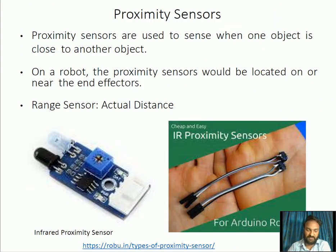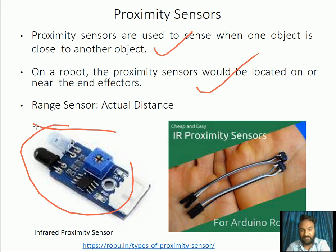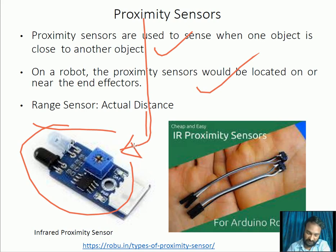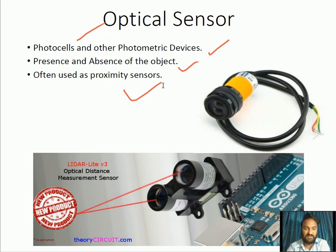Proximity sensors detect when one object is close to another. On a robot, the proximity sensor is located on or near the end effector. When used to measure the distance between an object and the end effector, it becomes a range sensor — typically an infrared proximity sensor is used. Optical sensors utilize photocells or photometric devices to detect the presence or absence of objects, and are often used as proximity sensors.